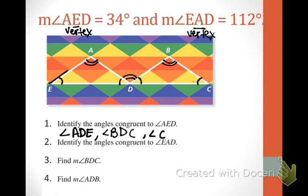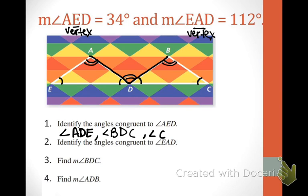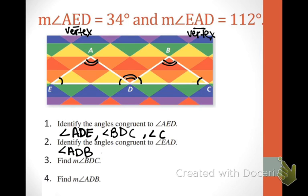Identify the angles congruent to EAD — A is the vertex, so we're naming all angles with two arcs. We can start with the middle angle: angle ADB, or you could say BDA. We've got one more — DBC or CBD, and angle B is another option because there's only one angle at point B. Any of those would have been correct.